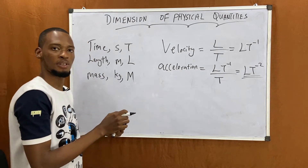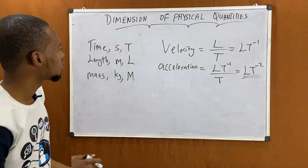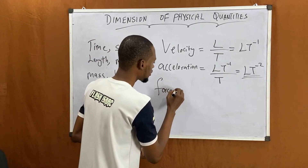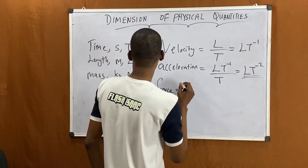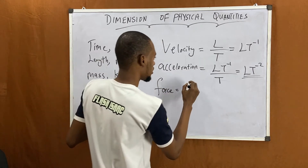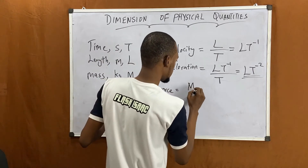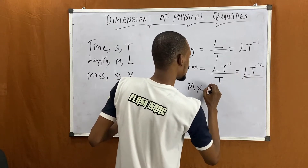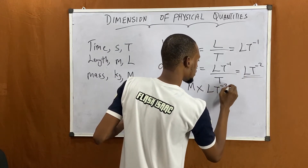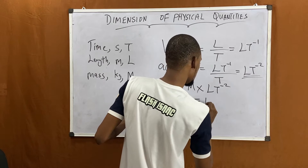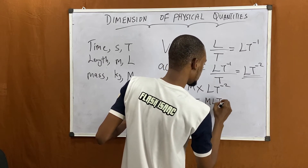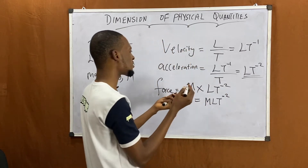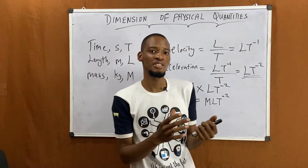Now let's look at force. Force equals mass times acceleration. Mass is M, and acceleration is L·T⁻². So the dimension of force is M·L·T⁻².